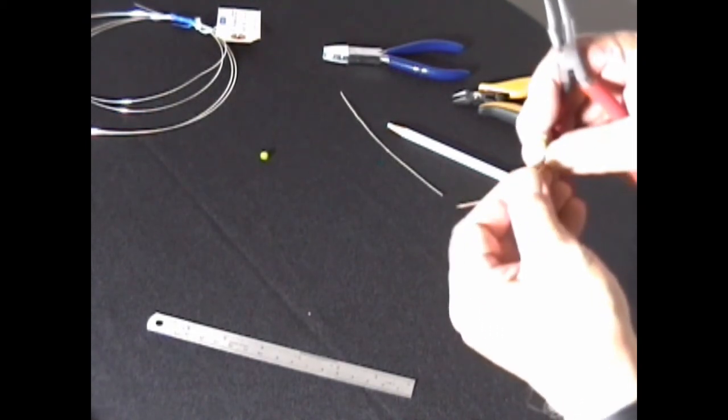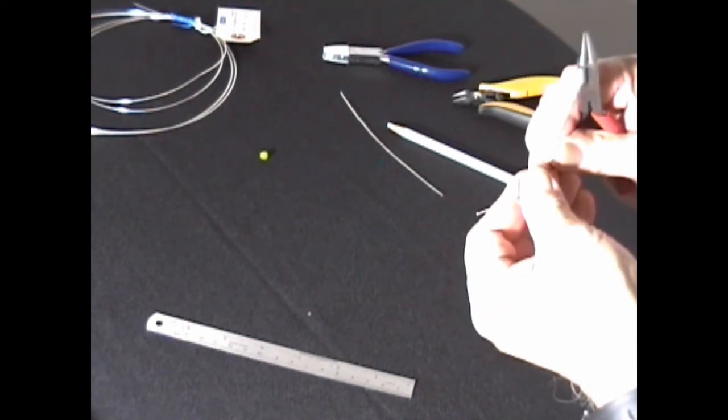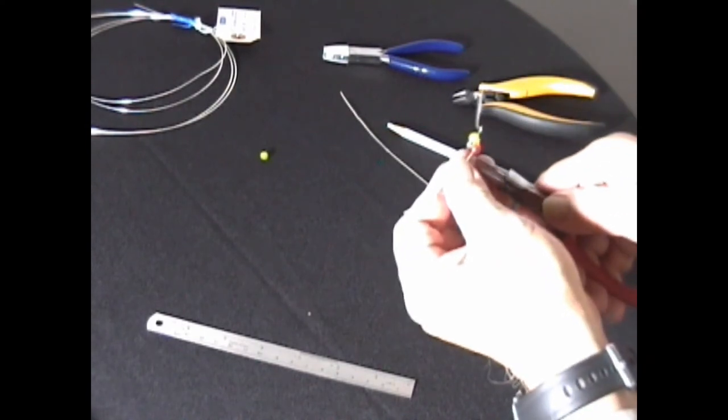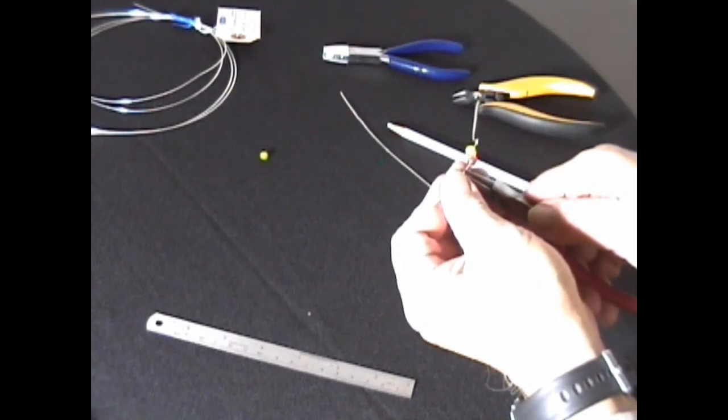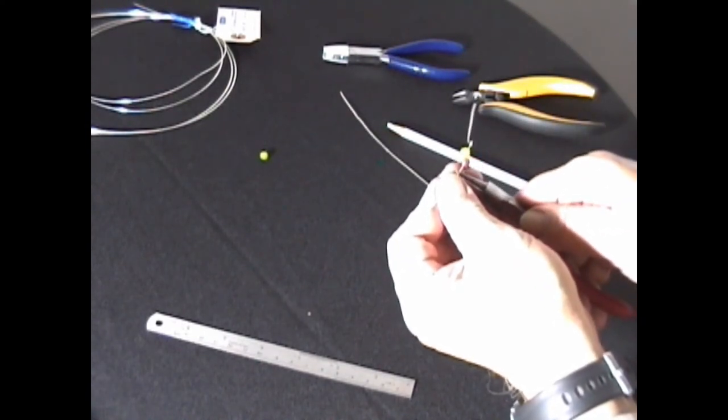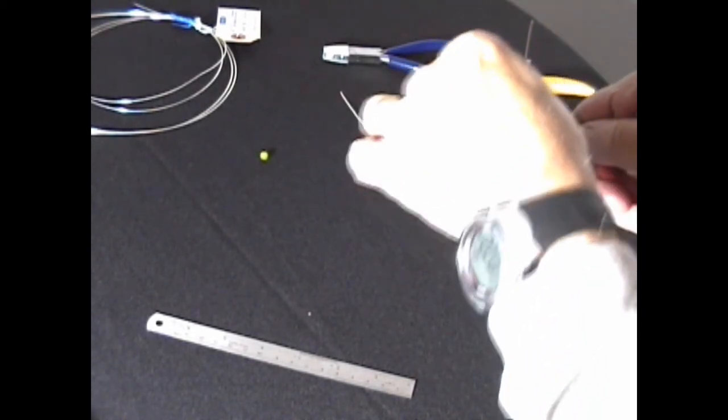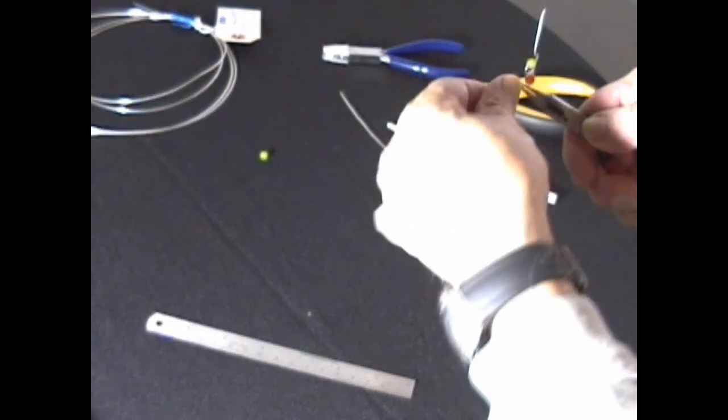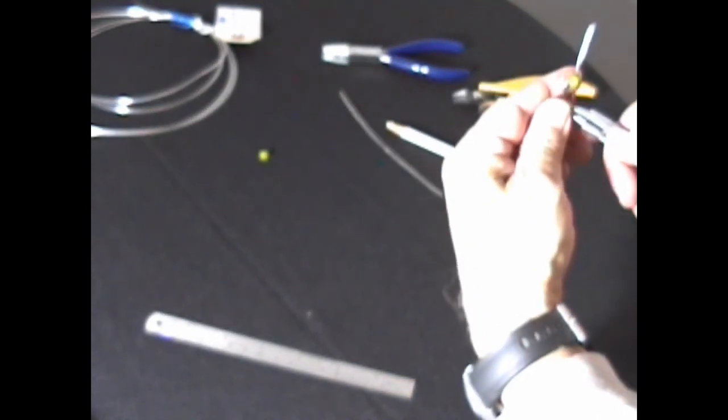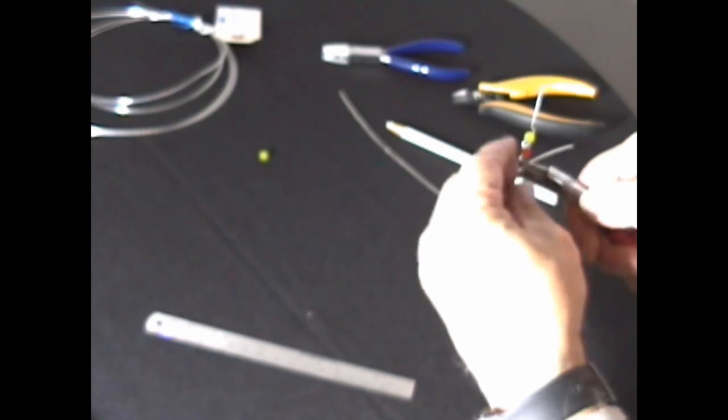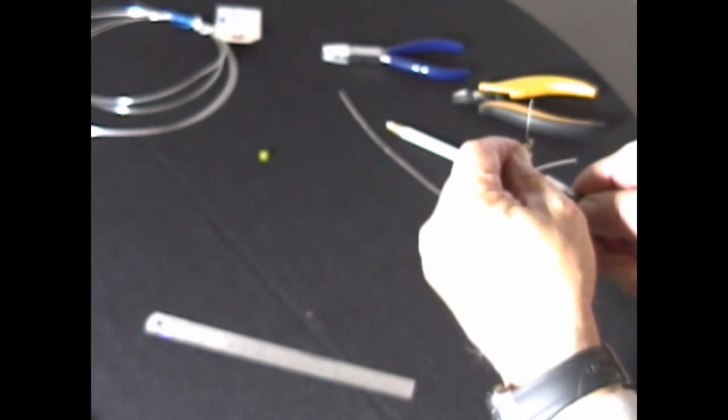Release the wire with your pliers, put your pliers again just below the bend, and bend your wire 180 degrees again. Basically, this is kind of a repetitive motion.